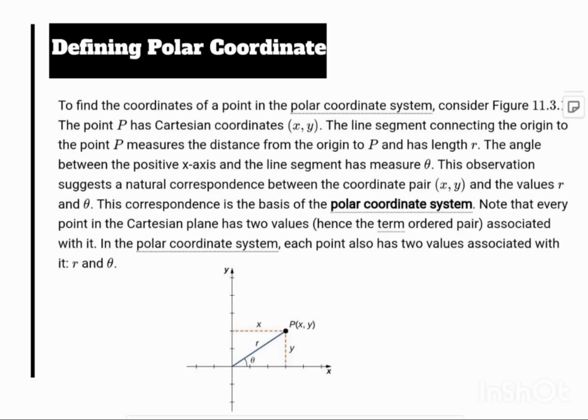To find the coordinates of a point in the polar coordinate system, consider the figure. The point P has Cartesian coordinates (x, y). The line segment connecting the origin to the point P measures the distance from the origin to P and has length r. The angle between the positive x-axis and the line segment has measure θ.